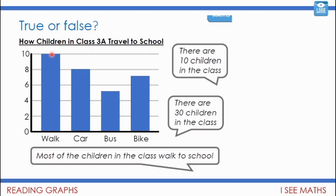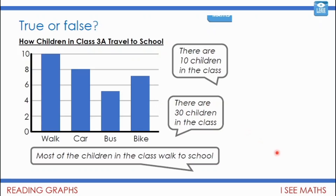There are 10 children in the class — that's false. The scale goes up to 10 but that's the number who walk. If I add up all values: 10 plus 8 is 18, plus 5 is 23, plus 7 is 30 children in the class. The last statement — most children walk to school — is also false. 10 out of 30 is less than a half, and adding the other bars gives more than 10.